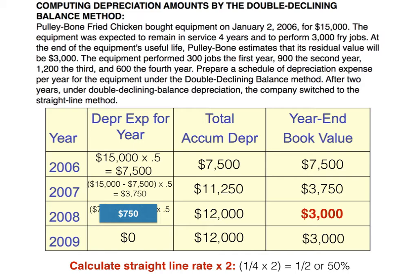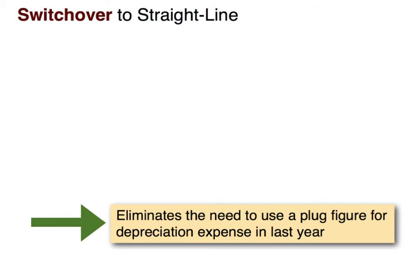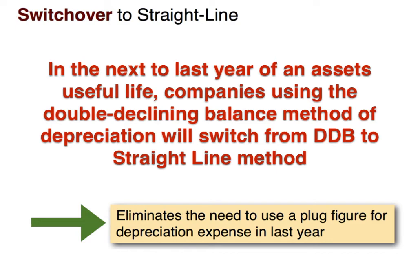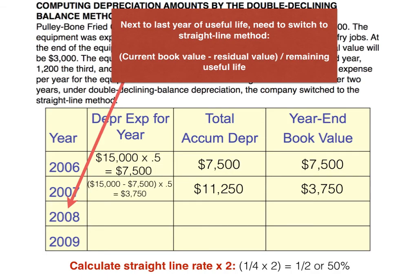Now let's address the last part of the problem: after two years under double declining balance, the company switched to the straight line method. Some companies do this to eliminate the need for a plug figure in the last year or two. So in the next to last year of the asset's useful life, the company switches from double declining balance to straight line. Let's look at what that would look like — the first two years remain exactly the same.